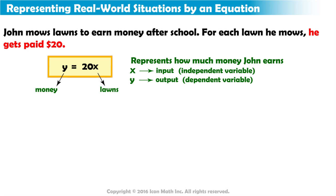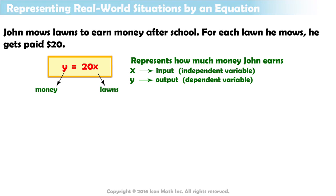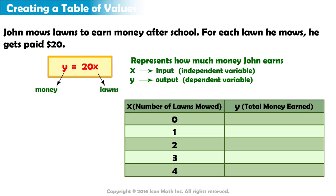Since he earns $20 per lawn, 20 multiplied by the number of lawns he mows equals the total amount of money he earns. Let's use the equation to complete the table.